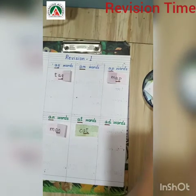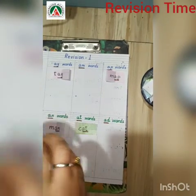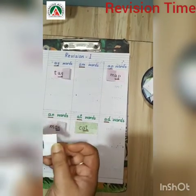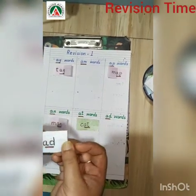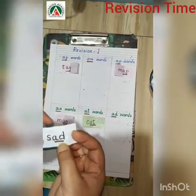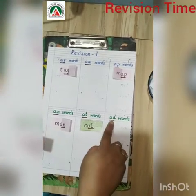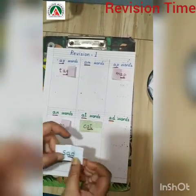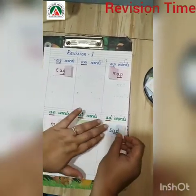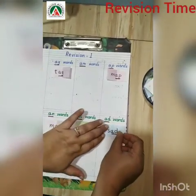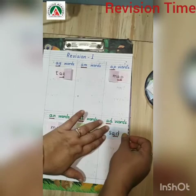Next word — sad. Where is 'ad'? Here it is. Sad — here it is, 'ad'. So I have pasted it here. Sad.